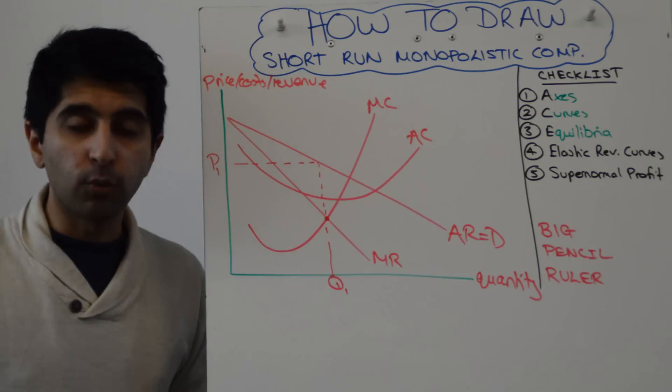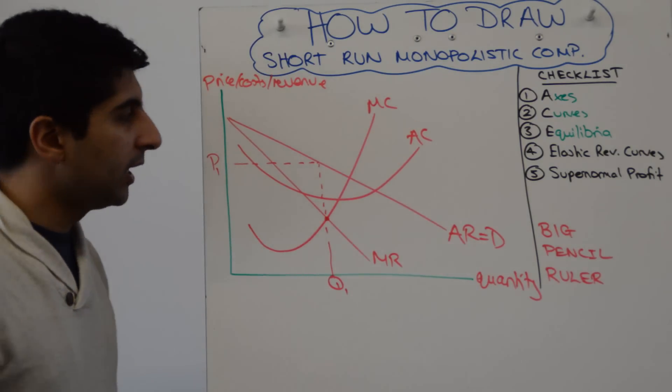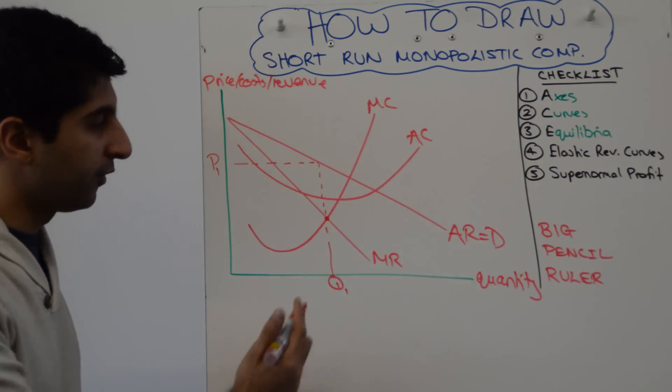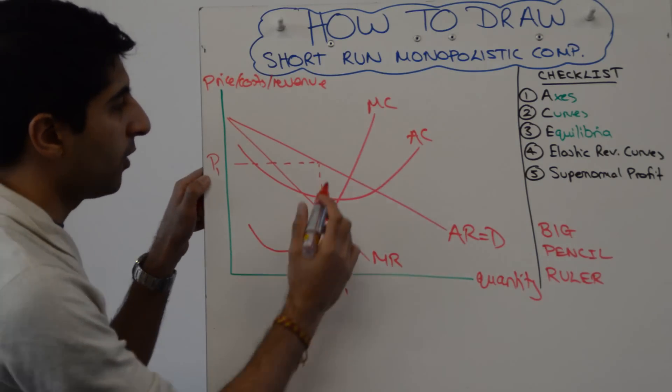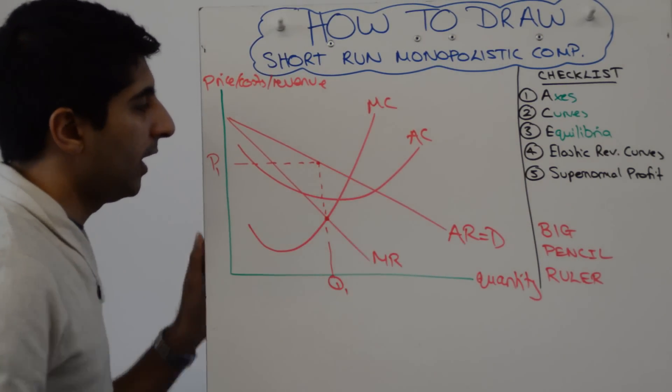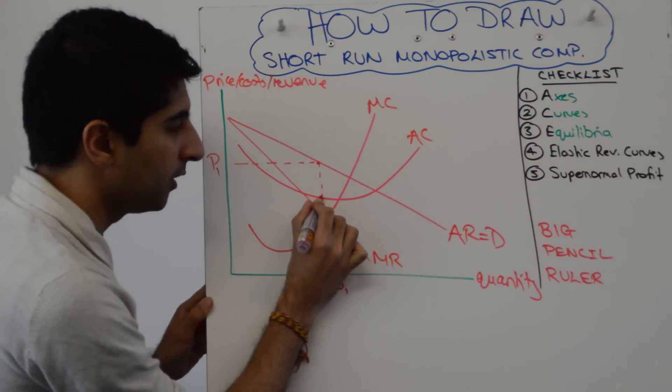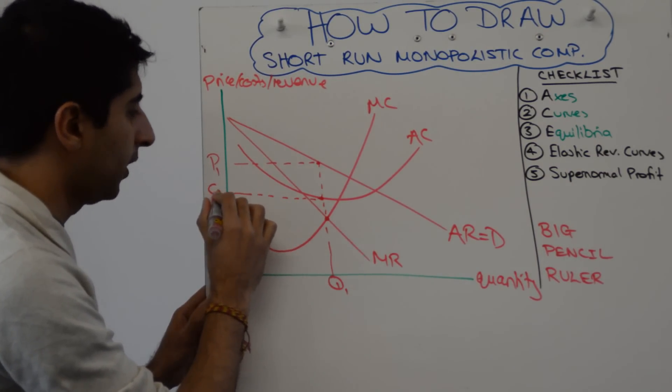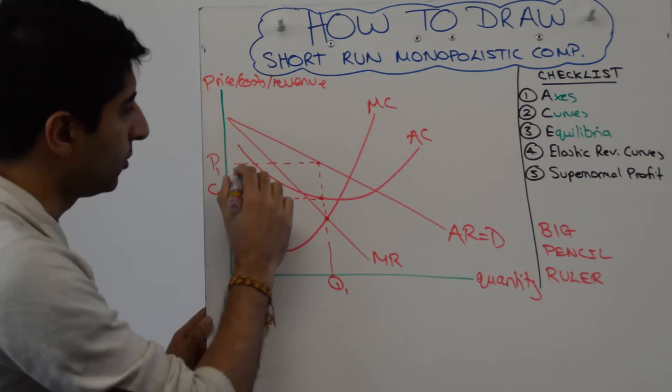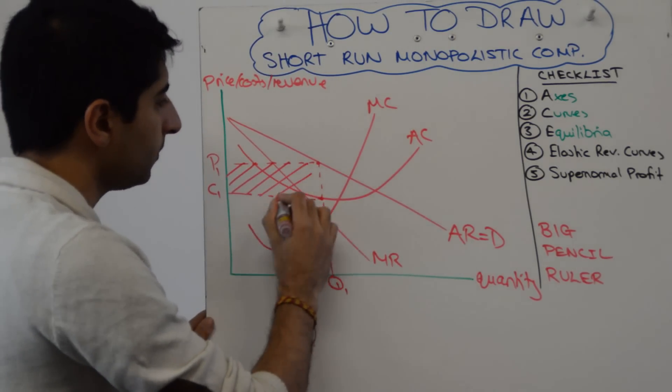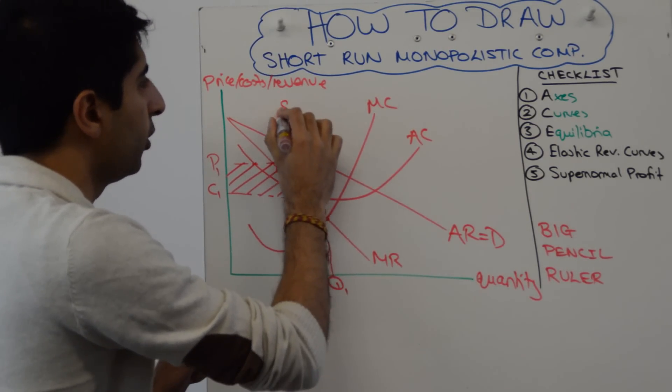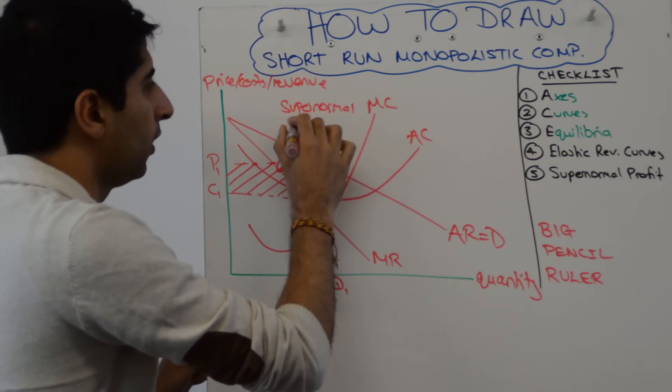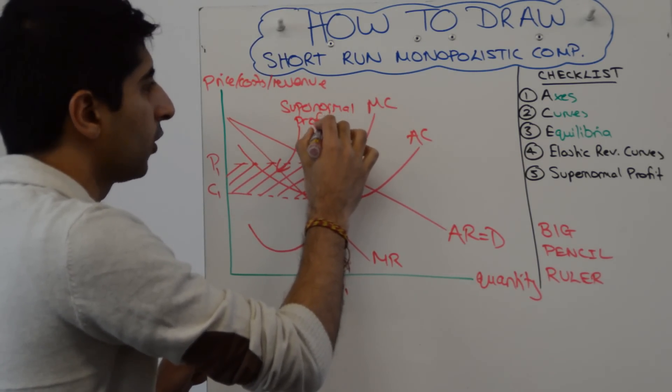And then as always we need to work out the level of profit. To do that we compare average revenue and average cost at the quantity level of Q1. So at Q1 average revenue is up here like P1 is, and the average cost is down here. So let's take that point across and call that C1. That leaves us a beautiful little box which we can shade in. And that is the super normal profit that exists in the short run in monopolistic competition.